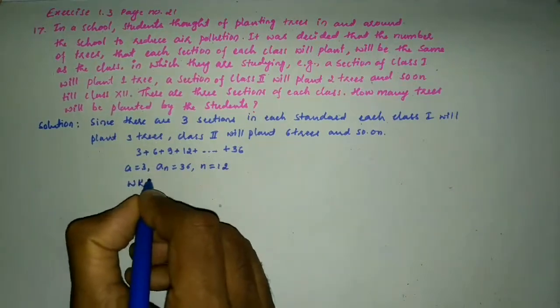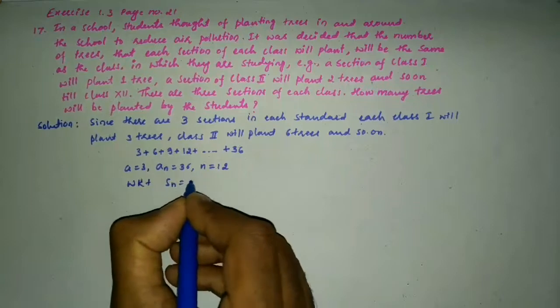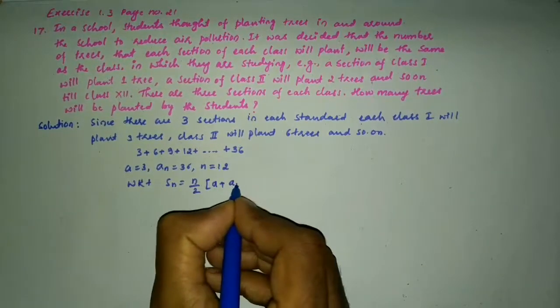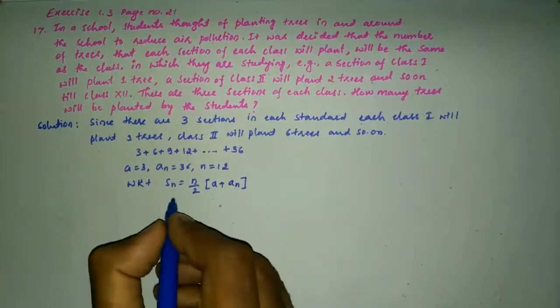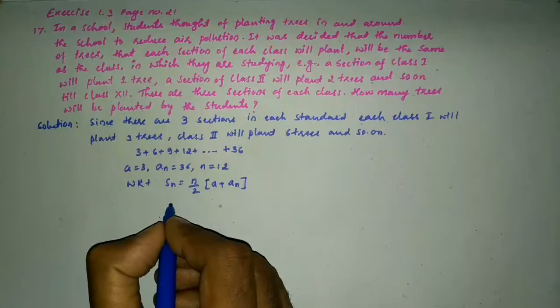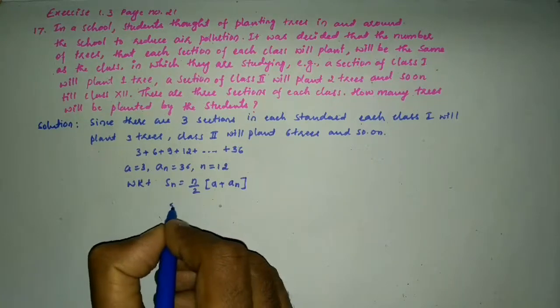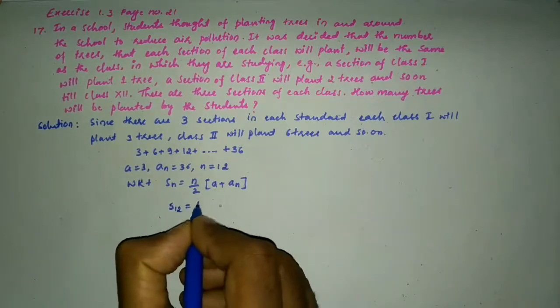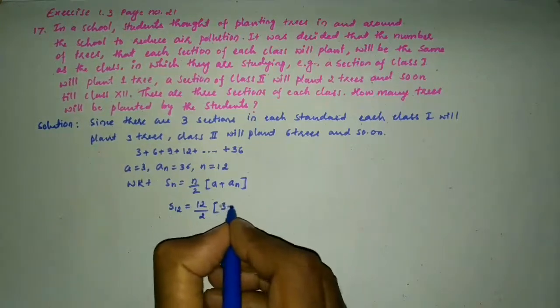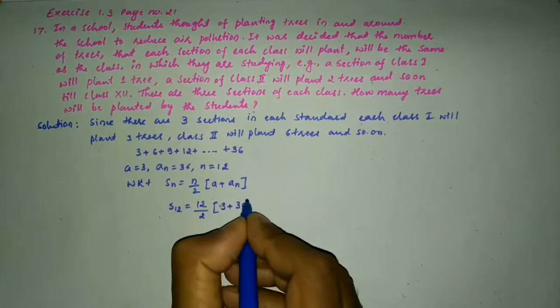We know that S_n is equal to n divided by 2 into a plus the nth term a_n. So S_n is S_12. S_12 is equal to 12 divided by 2 into a is 3 plus a_n is 36.